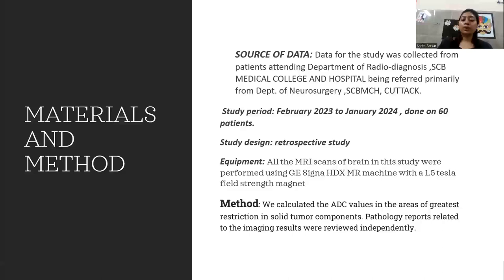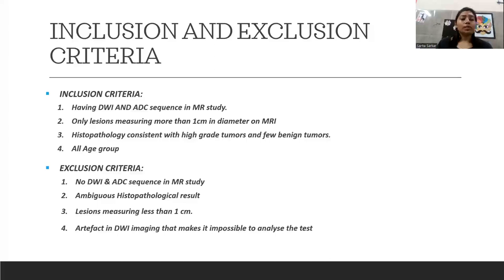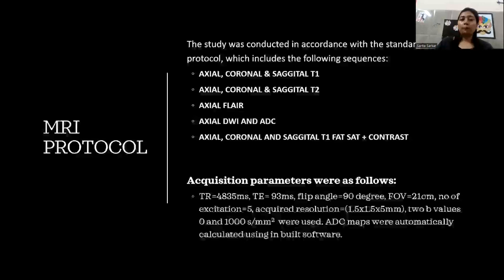Inclusion criteria included patients having DWI and ADC sequences in their MR study, lesions measuring more than one centimeter in diameter, and histopathology consistent with high grade or benign tumors, across all age groups. Exclusion criteria were: absence of ADC and DWI sequences, ambiguous histopathological reports, lesions less than one centimeter on MR, or artifacts in DWI.